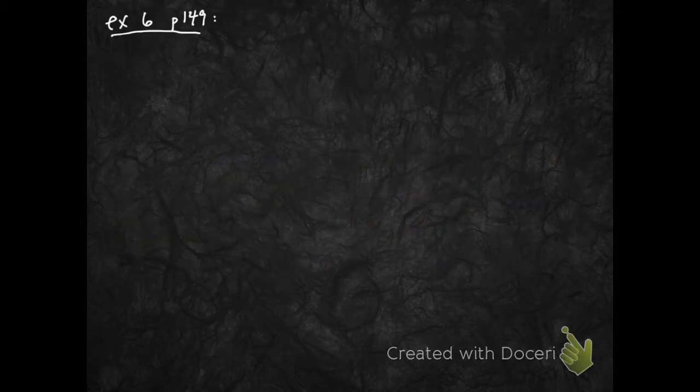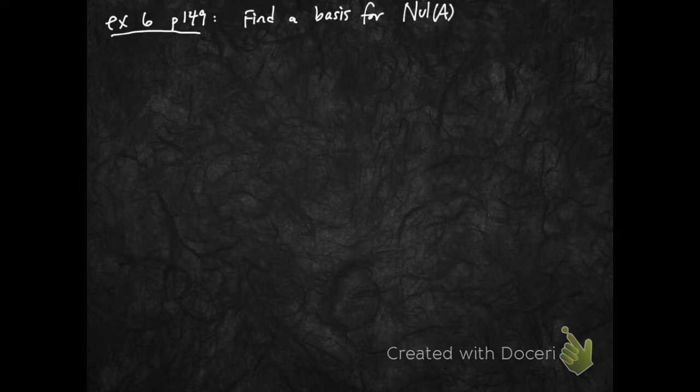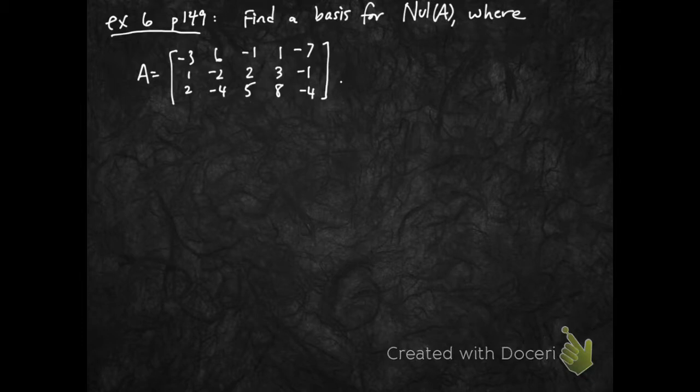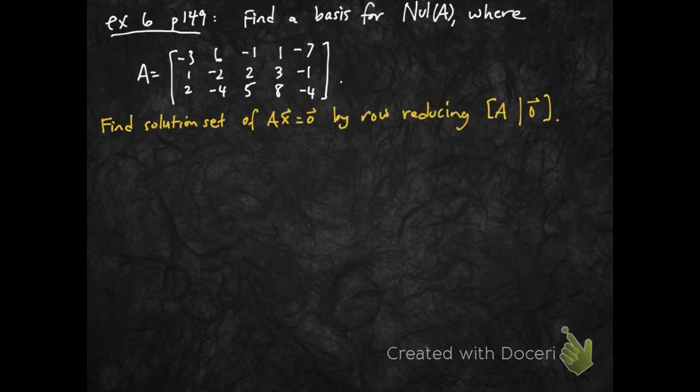Let's take a look at example six. This is on page 149. The question is to find a basis for null A, where A is this matrix given here. So, this is a 3 by 5 matrix. We want to find the solution set of A x equals 0 by row reducing the augmented matrix A 0. So, let's just go through those steps.